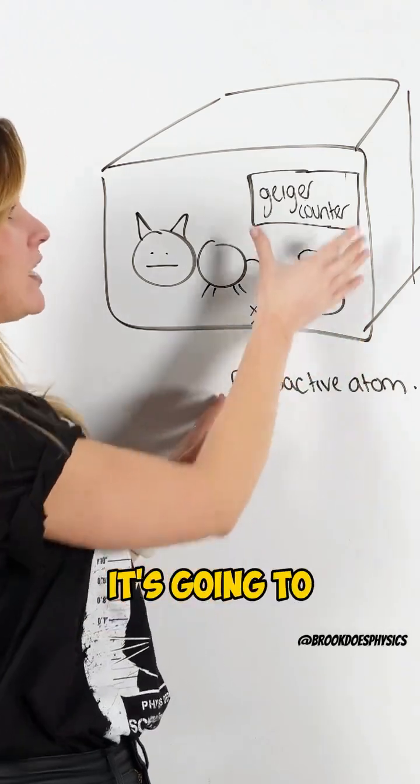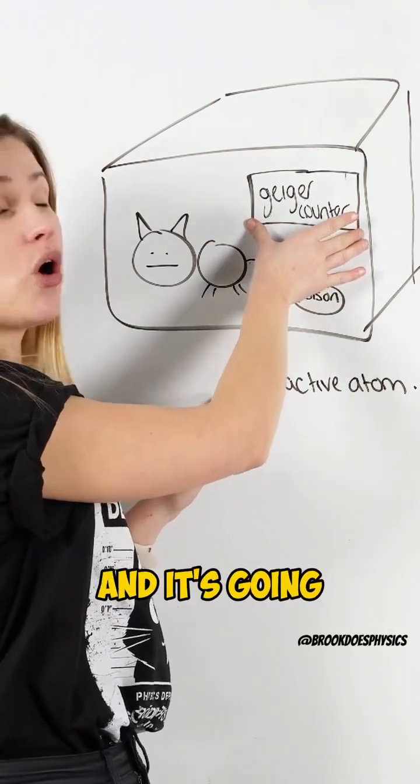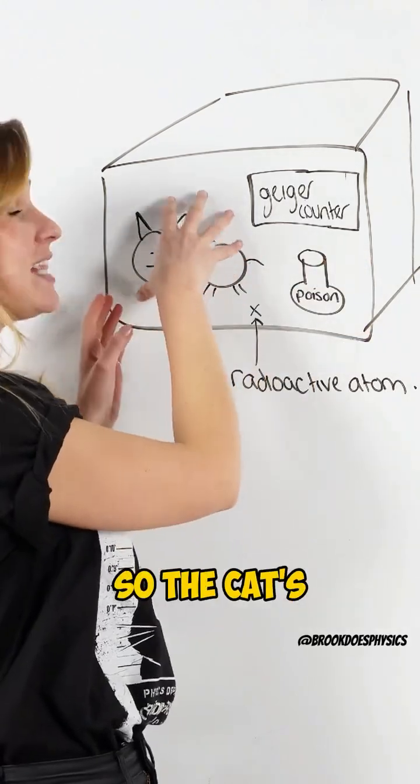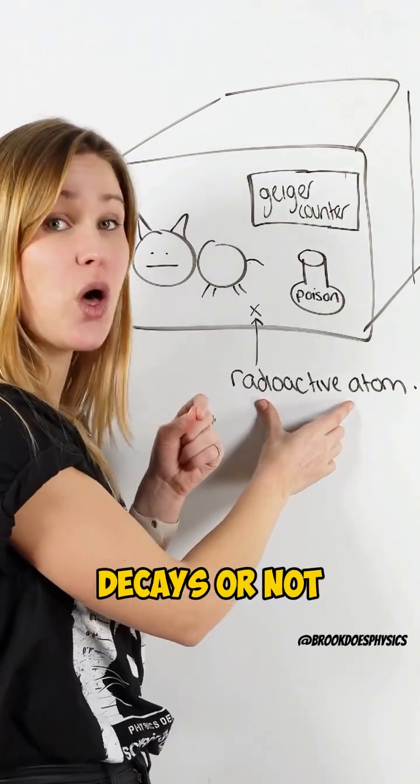If it decays, it's going to get detected by the Geiger counter and it's going to cause the poison to break, killing the cat. So the cat's life depends on if this atom decays or not.